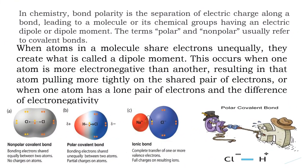A covalent bond is formed by the overlapping of atomic orbitals or by sharing of electrons. When we consider a pure covalent bond, we think the electrons between the atoms are shared so that the bond is formed between the two atoms. But it has been observed that some molecules are not completely covalent — the electrons are not shared exactly between the two atoms.